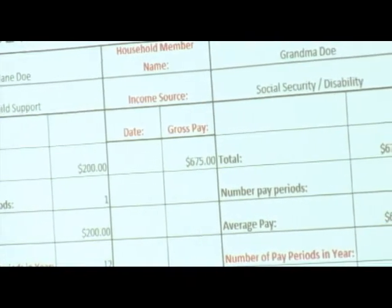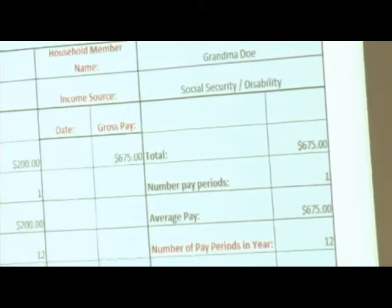Let's say there's another household member named Jane Doe with another source of income. Maybe she gets child support from a previous marriage — $200 every month, so 12 pay periods in a year. Over to the right there's another place where you can add another person's income. Let's say grandma Doe is getting social security income of $675 every month. Data entry is reduced because of these pull-down menus.